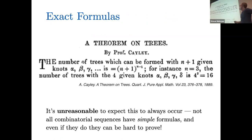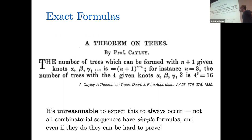What is interesting? One interesting thing could be an explicit formula. There are lots of very famous explicit formulas — here's what's now known as Cayley's formula, the number of labeled trees on N nodes. But it's unreasonable to expect this will always occur. Not all combinatorial sequences have simple formulas, and even characterizing what 'simple' means is quite fraught. Even if they do have simple formulas, they can be hard to find and hard to prove.